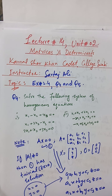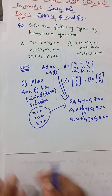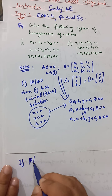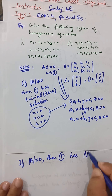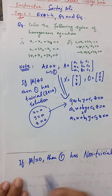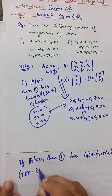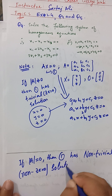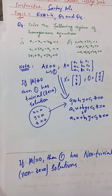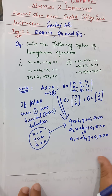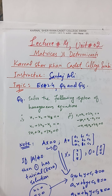The next important point is: when the determinant of A equals zero, then the system has a non-trivial — meaning non-zero — solution. You will get at least one value of x, y, or z not equal to zero, and it may be that all of them are not equal to zero. Keep these two points in mind.